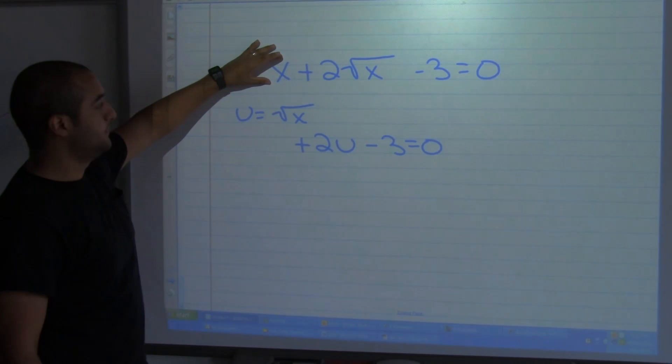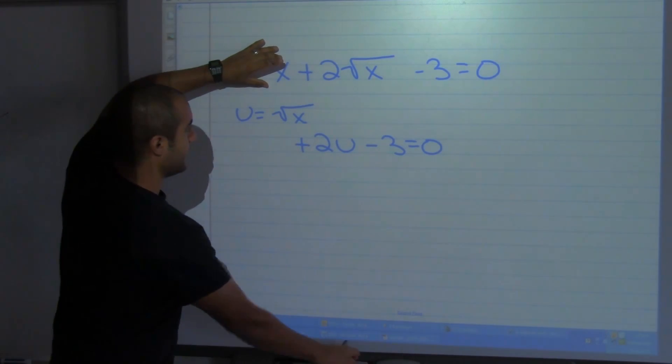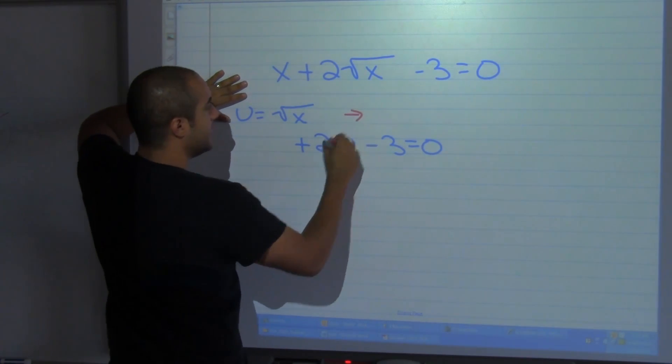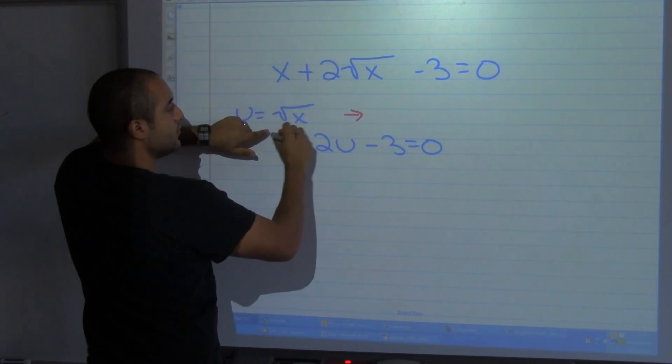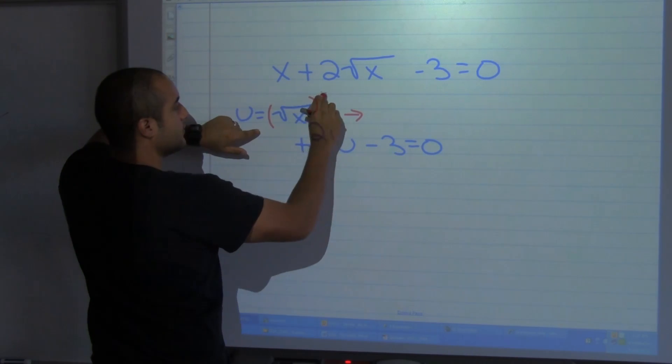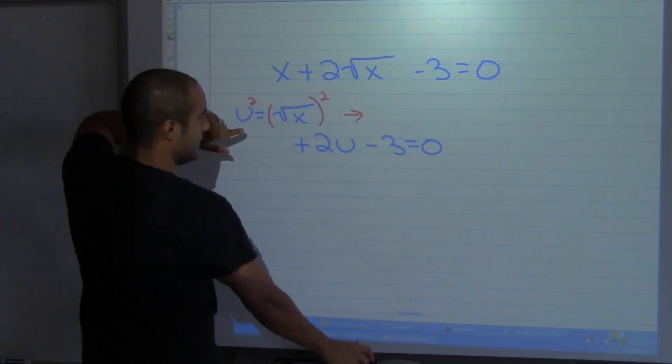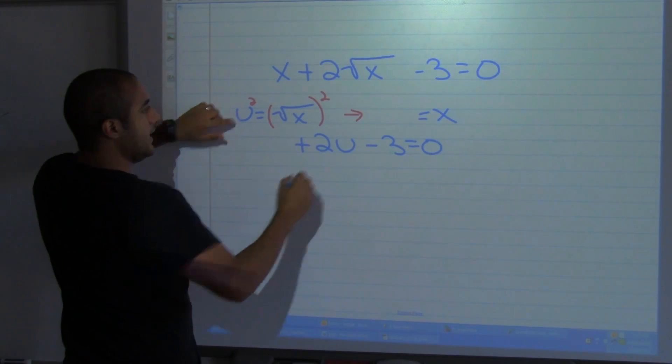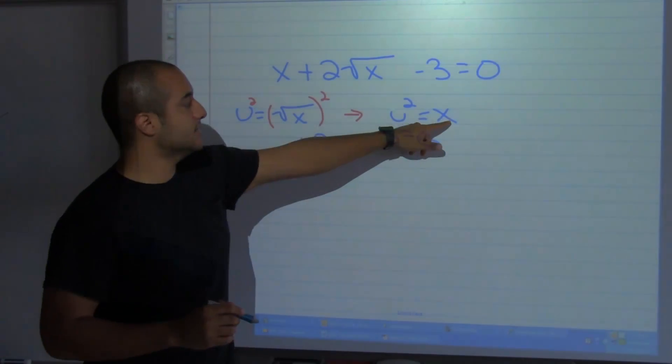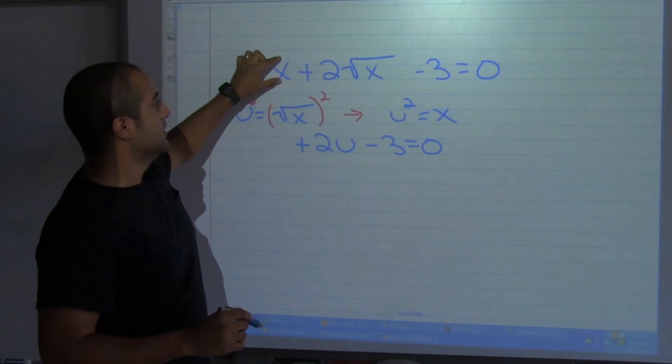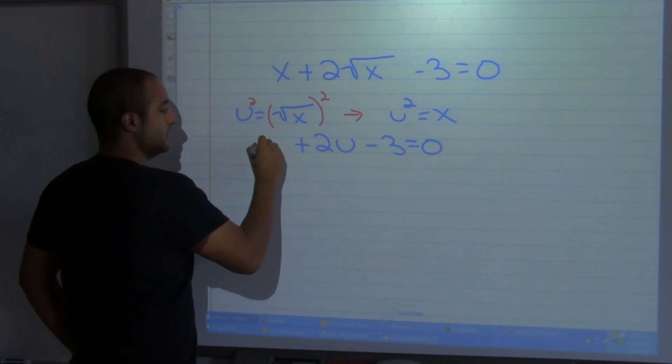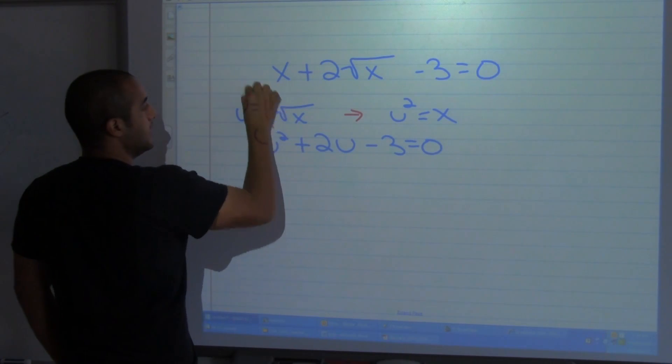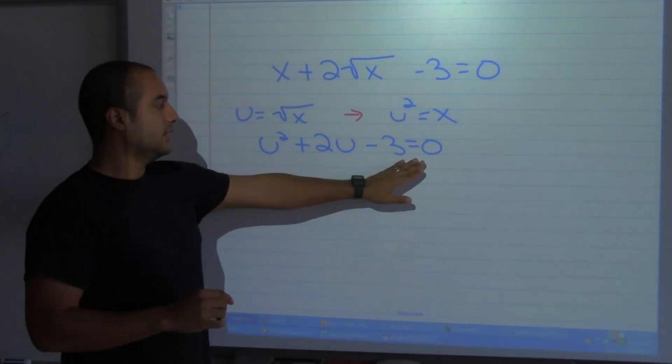What happens to this term? Well, by saying this it also implies that if I square both sides, if I square both sides, doesn't the square root go away? And that means that x is equal to u squared. So instead of x I have u squared, and now I have a quadratic equation that I know I can work with.